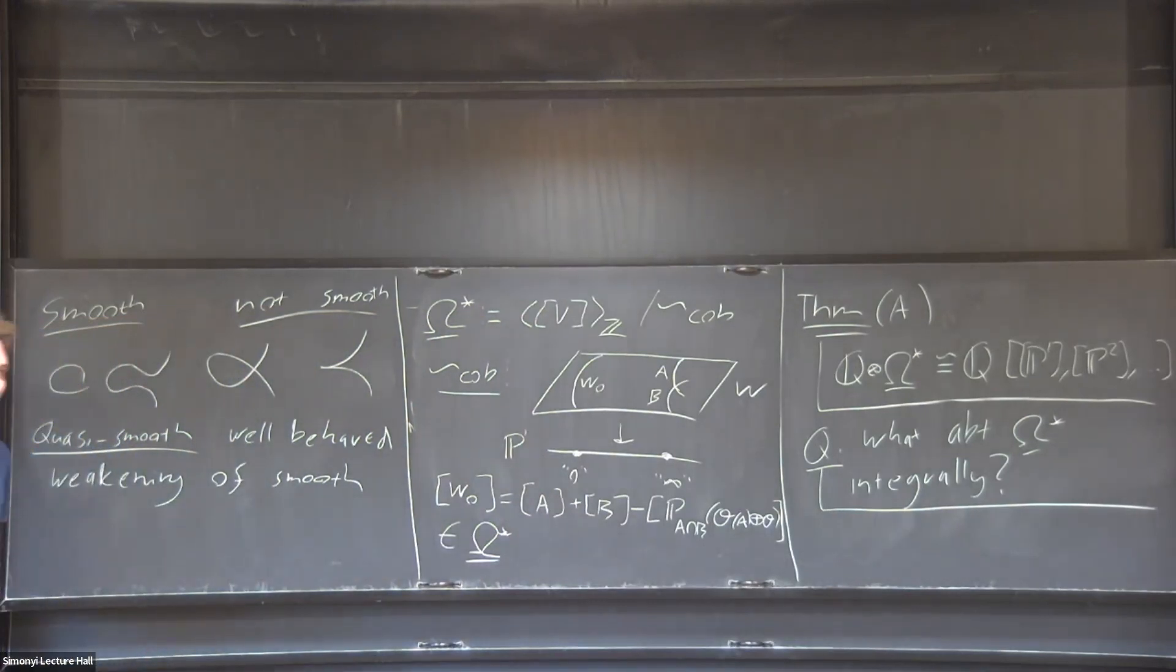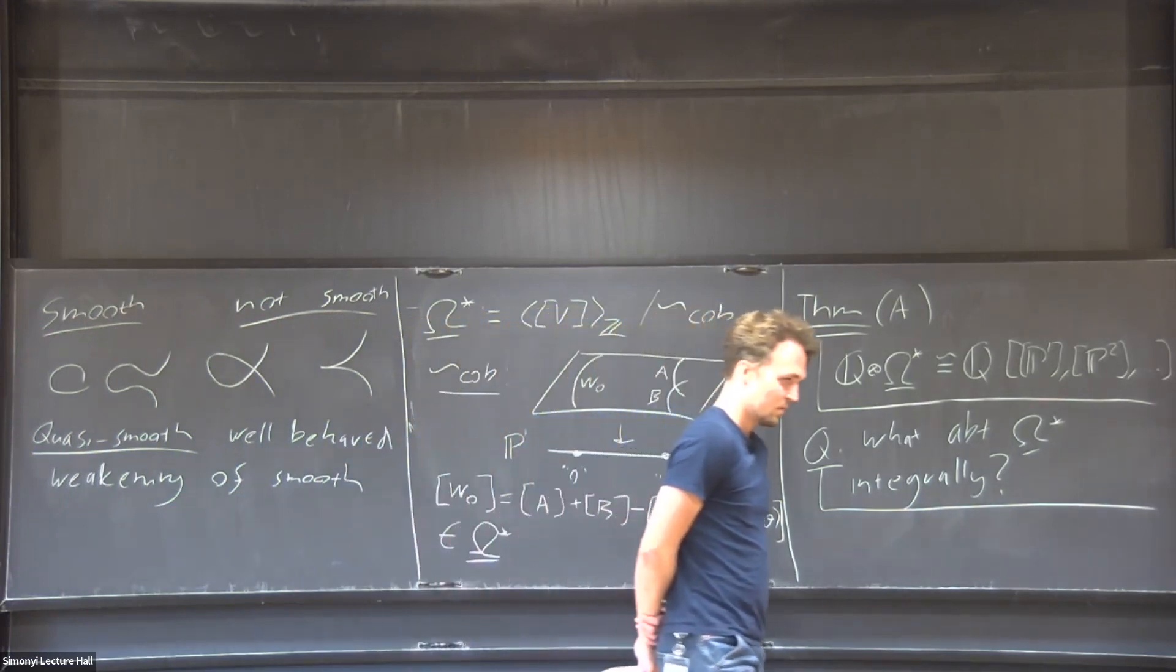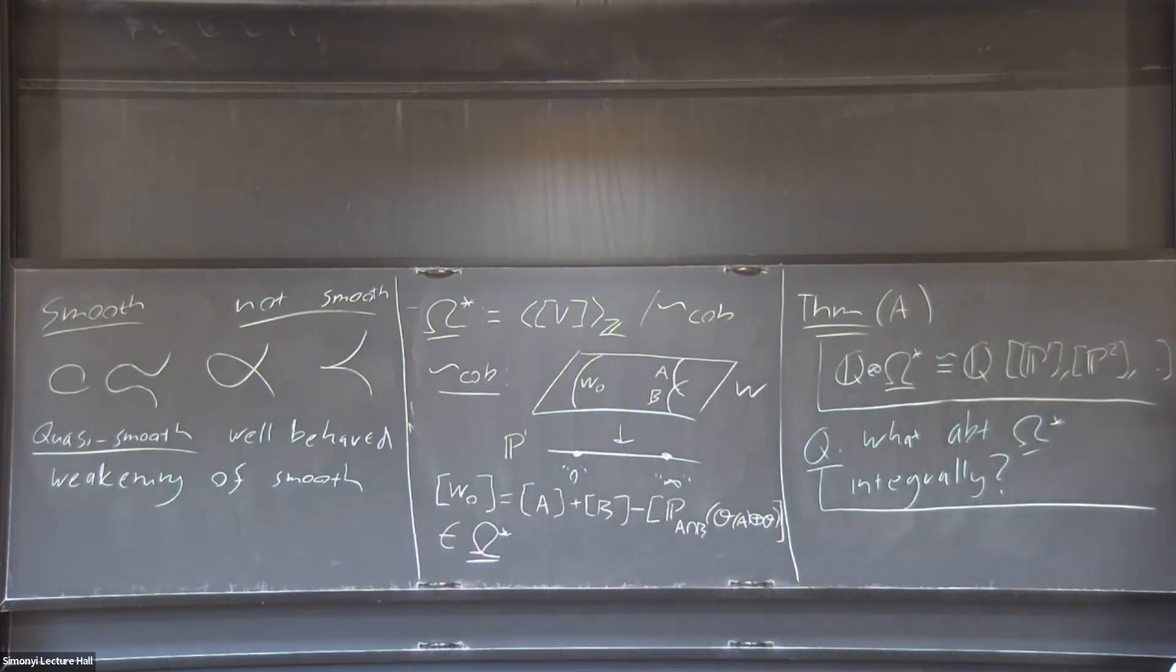When the characteristic is zero, let's say C, usually there's some comparison to the topological version, even though these things are not smooth? In characteristic zero, Levine and Morel give a different construction where everything is smooth, so then it's easy. Levine and Schurig extend it to the derived thing and show that they are actually equivalent.